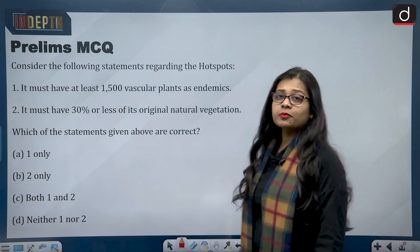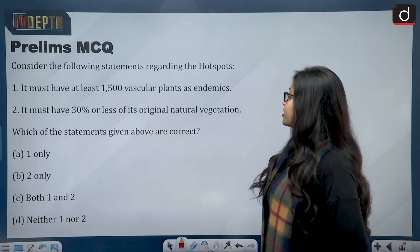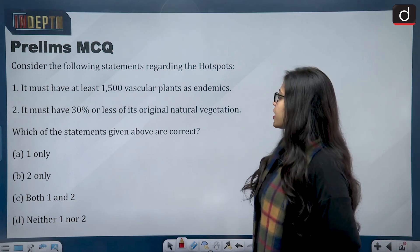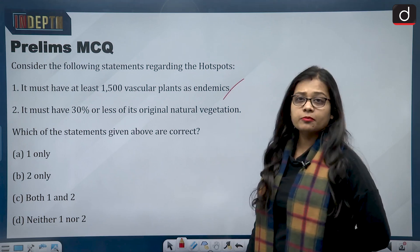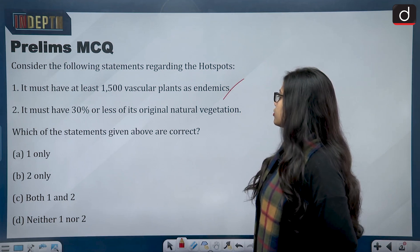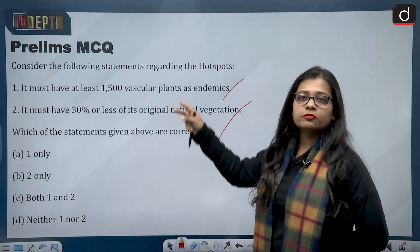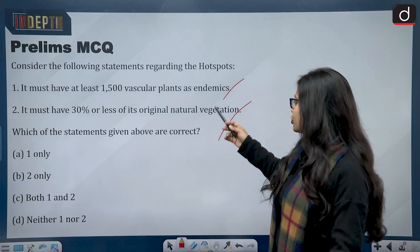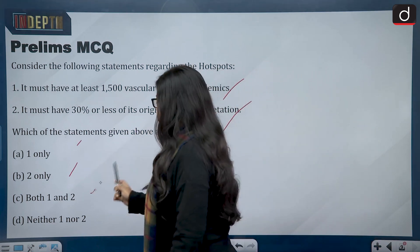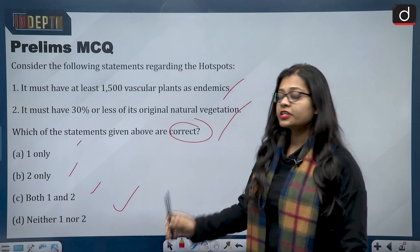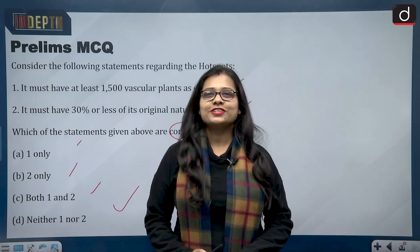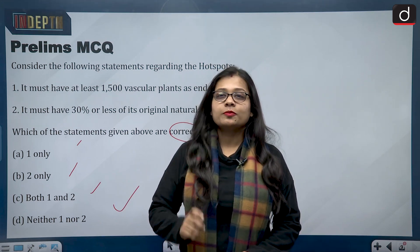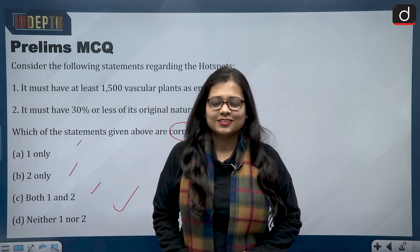For the Prelims MCQ, consider the following statements regarding hotspots: Statement 1 — it must have at least 500 vascular plants as endemics; Statement 2 — it must have 30% or less of its original natural vegetation. Give the answer in the comment section using the codes: one only, two only, both one and two, or neither one nor two. Thank you for watching — keep reading, keep writing, and do subscribe to the Drishti IAS channel.